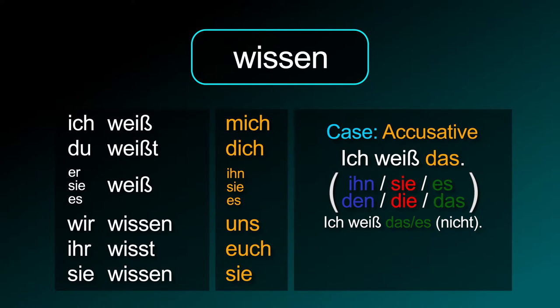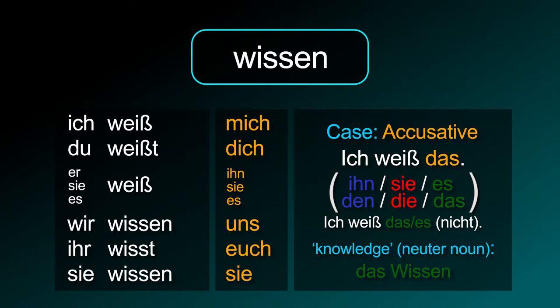'I don't know' is ich weiß es nicht. In German, if you just want to say 'I know' or 'I don't know,' it is better to add das or es, because in most cases it will sound incomplete if you leave it out. Its noun is neuter: das Wissen.